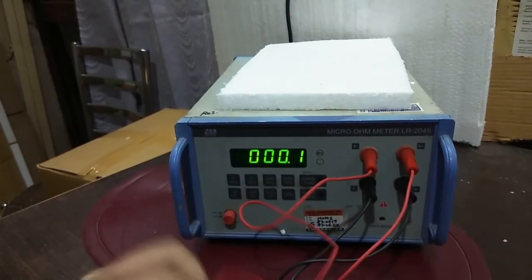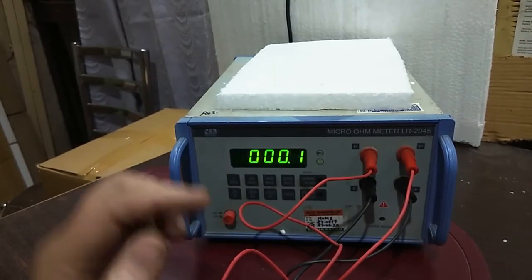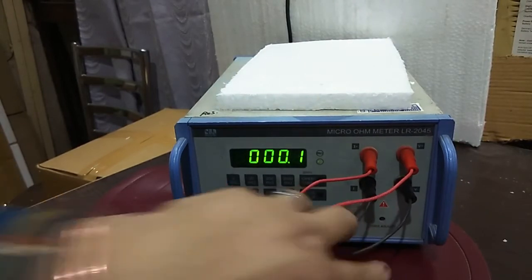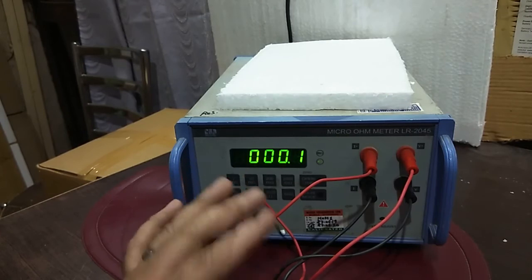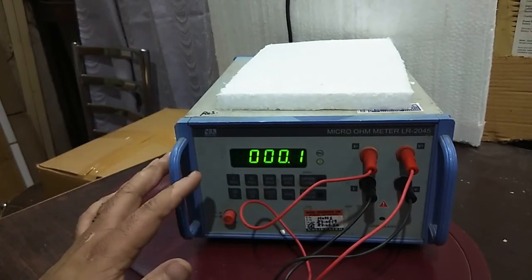Then you'll be getting zero in each and every range. But for the first range, Motwani have provided the zero adjustment port. By the help of a small screwdriver, you can set or adjust that zero error if there is something in this instrument.